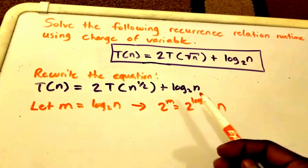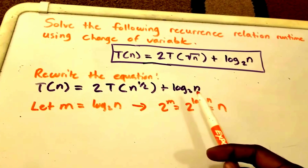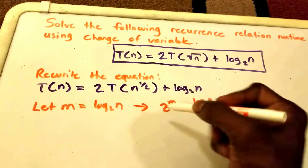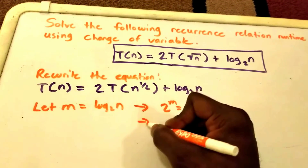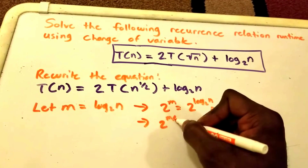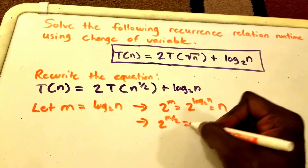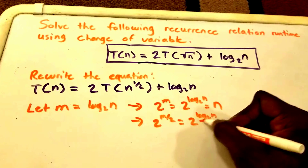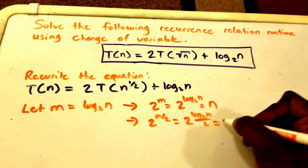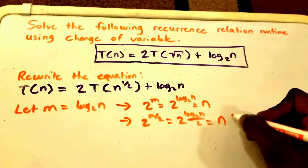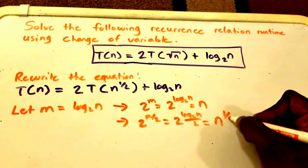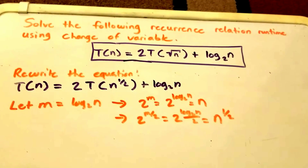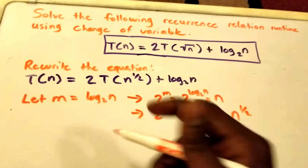So now wherever we see n we can replace it with 2^m. That also implies that 2^(m/2) = 2^(log₂(n)/2) = n^(1/2). So we now have substitutions for both n and n^(1/2).